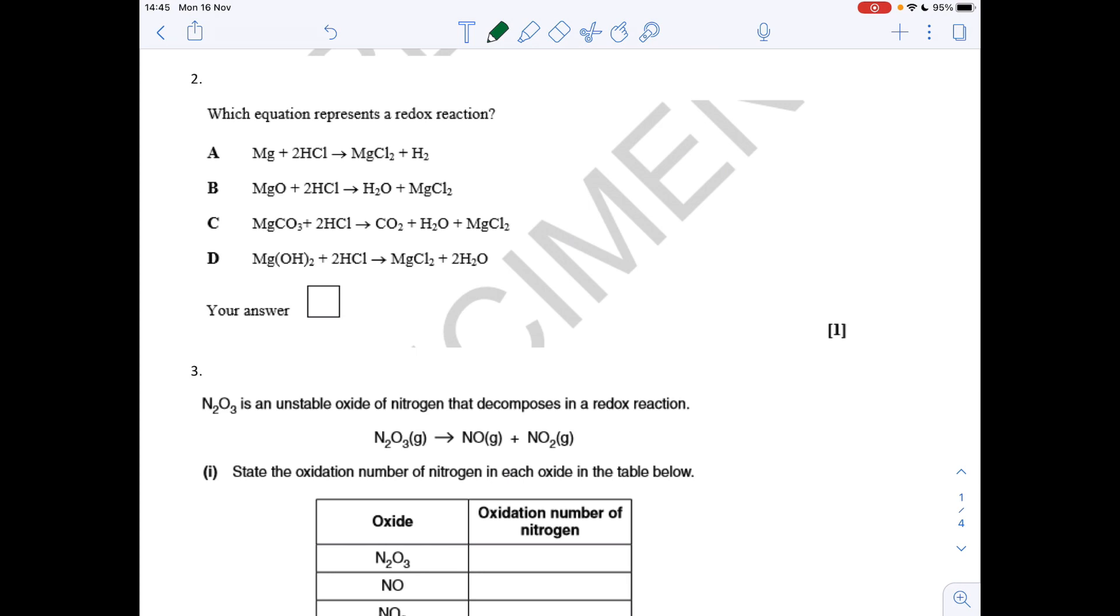Question two, which equation represents a redox reaction? We're looking for an oxidation process and a reduction process in the reaction. The best way to tackle something like this is just go for oxidation numbers. If we start with A, magnesium has an oxidation number of zero, but in the compound MgCl2, it's +2. So that's an oxidation process. So is there a reduction process? Well, hydrogen starts out at +1 and it goes to zero in hydrogen, the element. So you've got oxidation and reduction in the same reaction. So the answer was A.